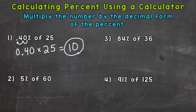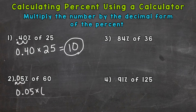So let's go to number 2. Again, we need the decimal form of the percent and multiply it by the number. So 5% of 60. Decimal form of 5%: move the decimal twice to the left, which is dividing by 100. And we get 5 hundredths times 60. Plug that in, and the answer is 3. So 5% of 60 is 3.